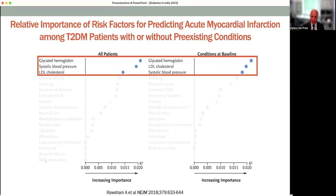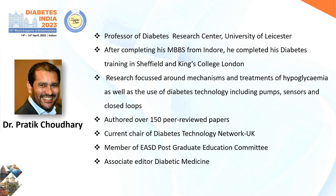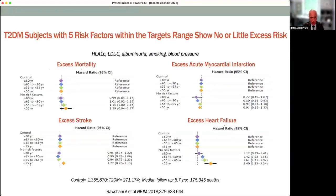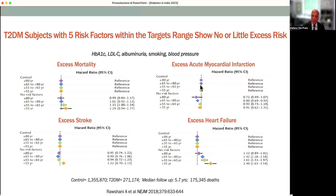This is a very large population analysis. It is possible to extract individuals with diabetes who have all cardiovascular risk factors under control — people with normal HbA1c, normal cholesterol levels, normal albuminuria, non-smokers, with normal blood pressure. When you analyze and select those individuals and compare them across different age strata, looking at the risk for excess mortality, excess acute myocardial infarction, excess stroke, and heart failure, having all these conditions under control is associated with no significant increase in cardiovascular risk.